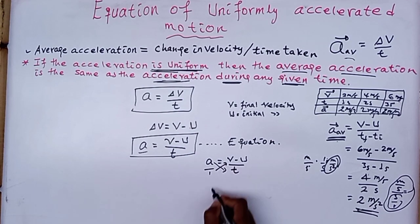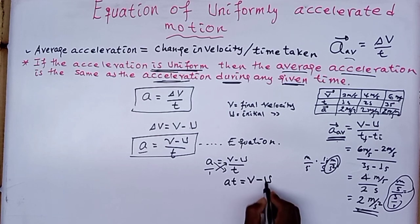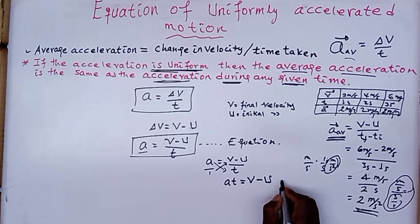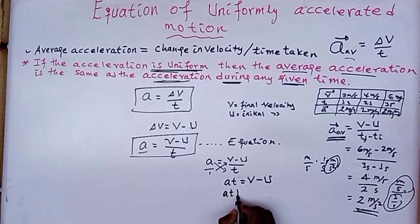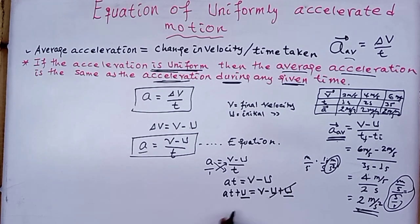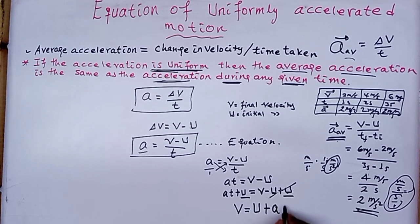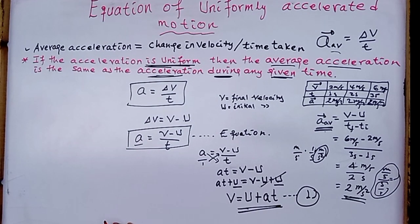Acceleration is equal to final velocity minus initial velocity over time. Multiplying both sides: acceleration times time is equal to final velocity minus initial velocity. Adding initial velocity to both sides: initial velocity plus acceleration times time is equal to final velocity. This is our first equation of uniformly accelerated motion.